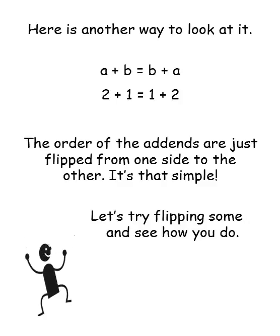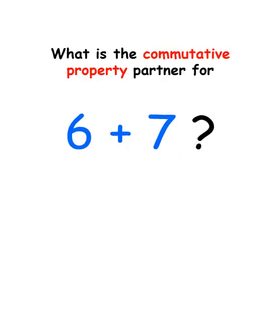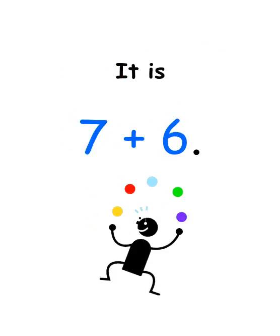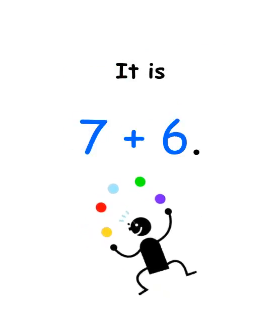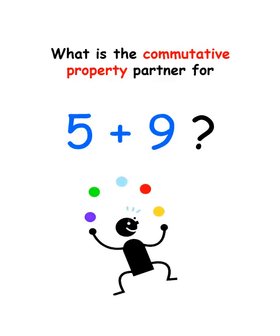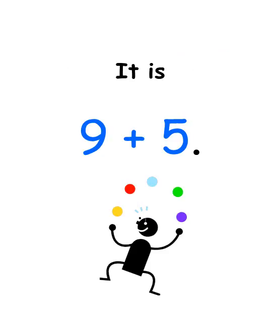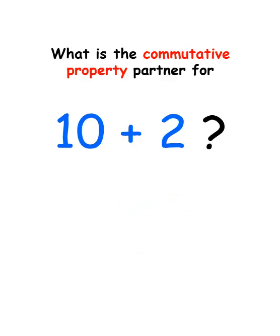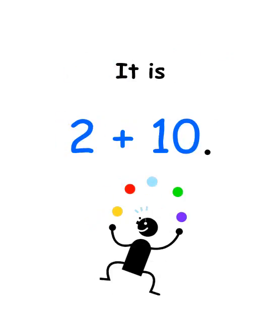Let's try flipping some and see how you do. What is the Commutative Property Partner for 6 plus 7? It is 7 plus 6. What is the Commutative Property Partner for 5 plus 9? Do you know? It is 9 plus 5. What is the Commutative Property Partner for 10 plus 2? Yep, you're right — it is 2 plus 10.